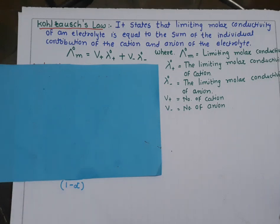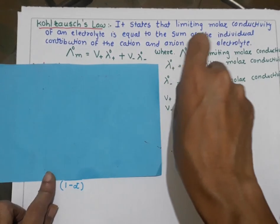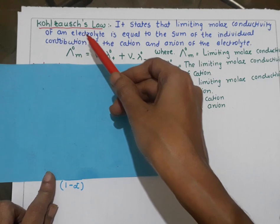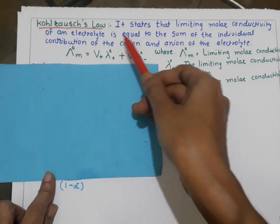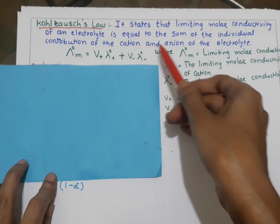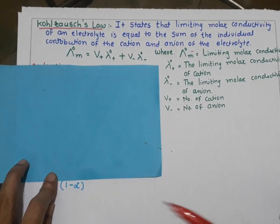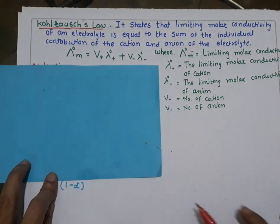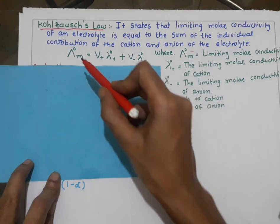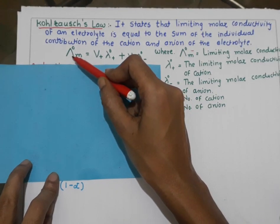Today we will learn about Kohlrausch's Law. The statement of Kohlrausch's Law states that the limiting molar conductivity of an electrolyte is equal to the sum of the individual contributions of the cation and anion of the electrolyte. Kohlrausch's Law is generally represented by the equation lambda naught m.